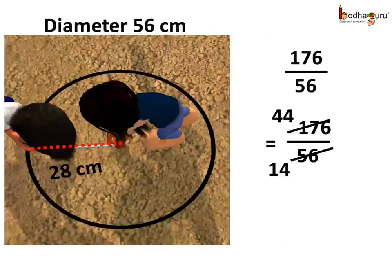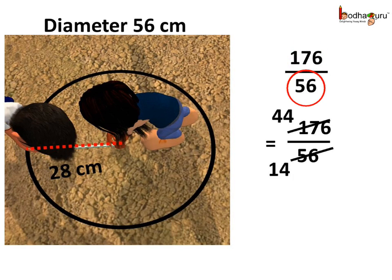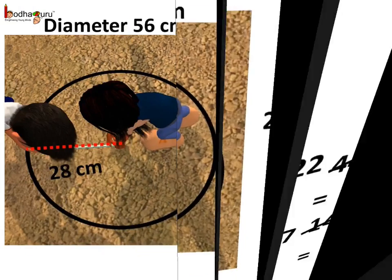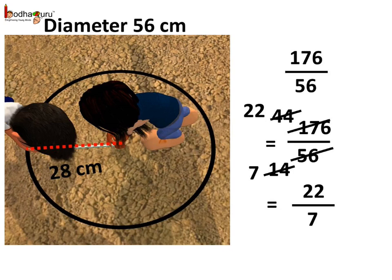In the second case, the circumference was about 176 cm and the diameter was 56 cm. Let's find the ratio of 176 and 56. They are divisible by 4, so we get 44 by 14. We can reduce this ratio further, as both 44 and 14 are divisible by 2, giving us 22 by 7.